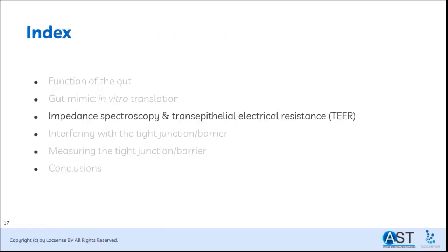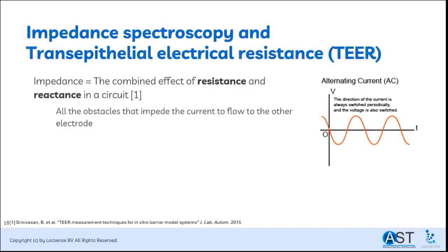Now it's time for a crash course on impedance spectroscopy and TEER. For impedance measurements, an alternating current is applied — meaning electrical current does not only flow from electrode 1 to electrode 2, but can also switch from electrode 2 to electrode 1. This switching happens at different frequencies. When the electrical current flows from one electrode to the other, it passes certain obstacles — for example, the cell layer. These obstacles are either a resistor or a reactance, and all of these together form the measured impedance.